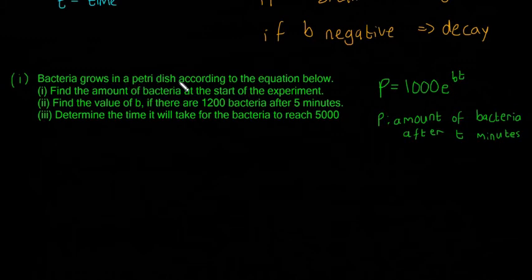So bacteria grows in a Petri dish according to the equation below. So a Petri dish is just one of those little glass or plastic things you grow bacteria in a biology lab. According to the equation below, so it's this equation here. P is equal to 1000E to the power of BT, where P is the amount of bacteria after T minutes. So it asks, find the amount of bacteria at the start of the experiment. Find the value of B if there are 1200 bacteria after five minutes. And determine the time it will take for the bacteria to reach 5000.